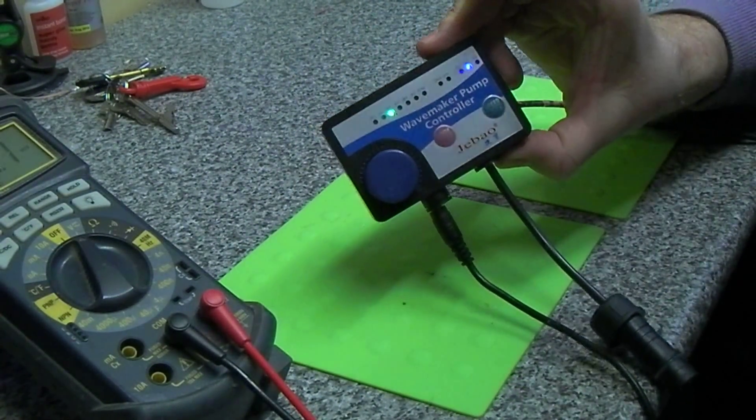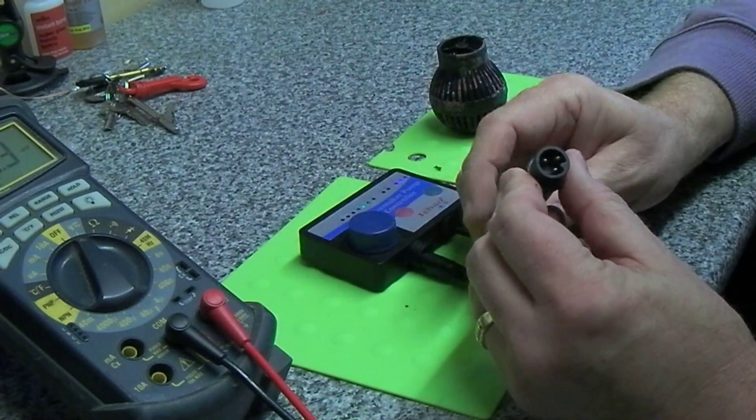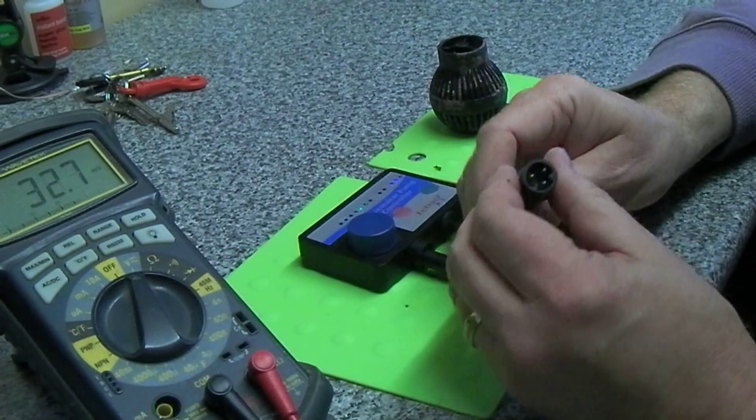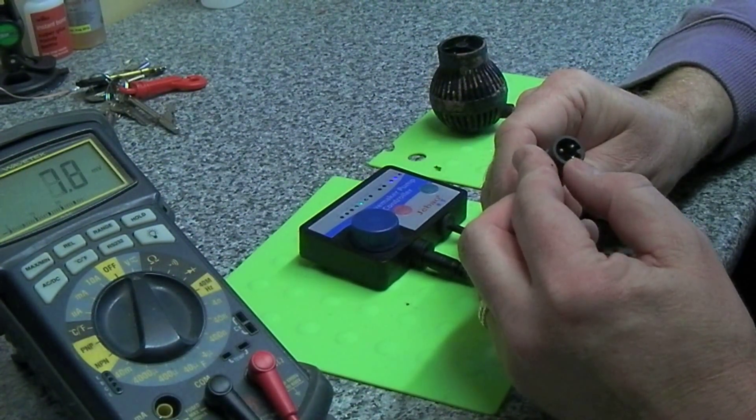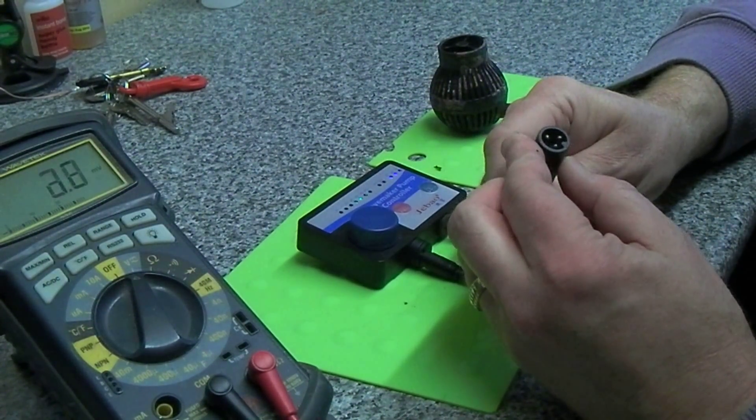You'll see three pins on there, and if you've got a meter you can check these yourself. You'll find 24 volts from the plug top adapter on one pin ground.